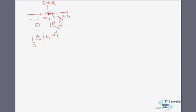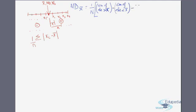So the mean deviation from arithmetic mean would be equal to (1/n) multiplied by: the sum of observations greater than the mean, minus the sum of observations less than the mean, minus the quantity (number of observations greater than the mean minus number of observations less than the mean) times the mean itself.